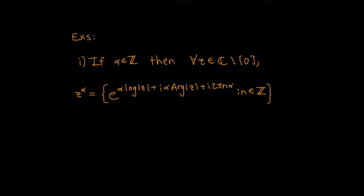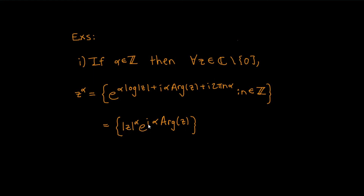Let's look at sub-examples. First, if α is an integer, then n·α is always an integer, so e^(i·2πnα) = 1 for all n. It doesn't matter what choice of n you make — you always get the single value |z|^α · e^(i·α·Arg(z)), which is the principal value of z^α. So the function is single-valued when α is an integer, which matches our definition of multiplication of complex numbers.